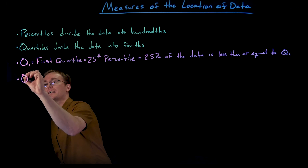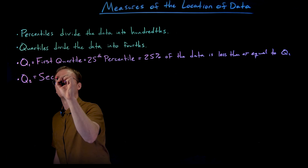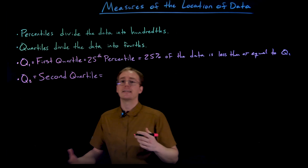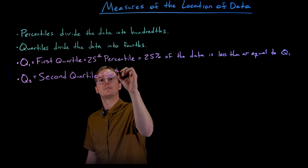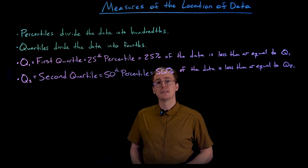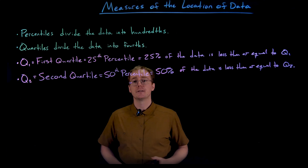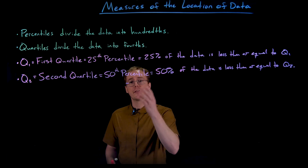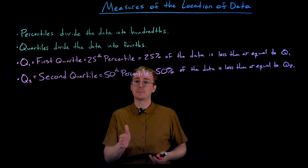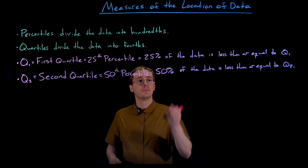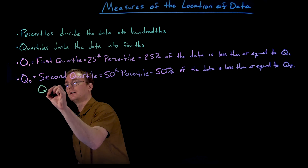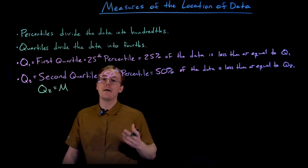Next, the second quartile is denoted by Q sub two, and it's equivalent to the 50th percentile. One important thing to note is that you might not actually see Q2 in some software, because another way to interpret the second quartile is that it is our median. Our earlier definition of the median is the value that 50% of the data is below and 50% is above — that's the same as the 50th percentile or second quartile. So we'll often see Q2 represented with M, representing the median.